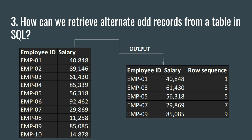In this video we will be retrieving the alternate odd rows from the table. We have a table here which contains employee ID and salary. The output should be the alternate odd records — so employee one is on row number one, employee two is on row number two, and we have to exclude row number two. We need to get row number three, which is employee three, because it is on an odd row number.